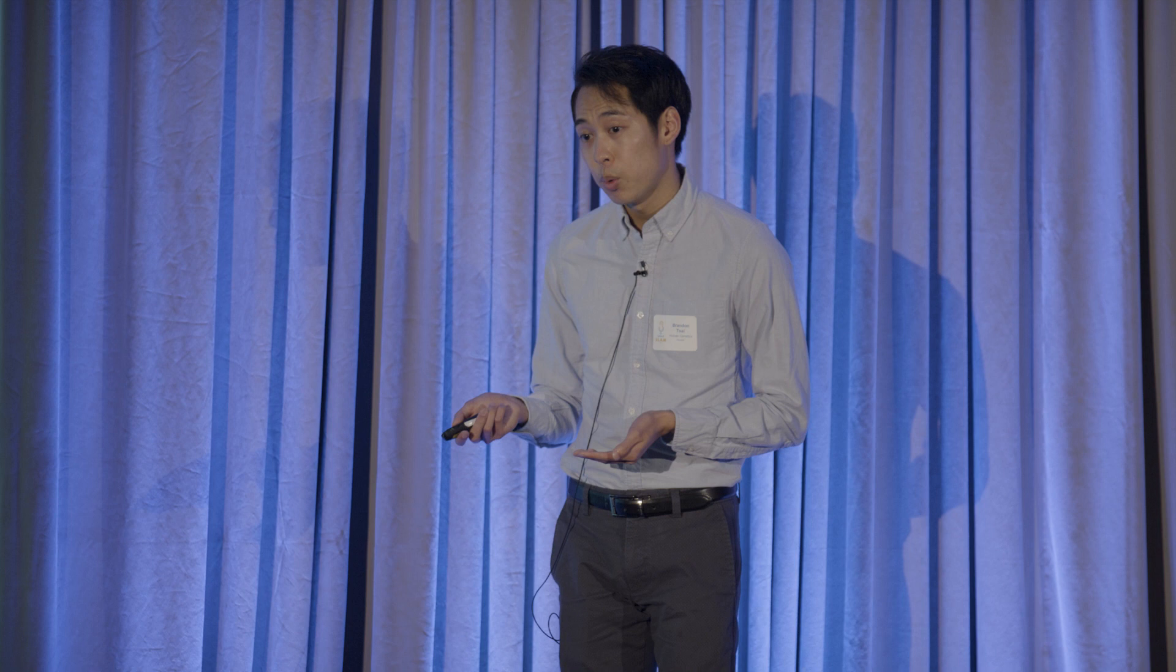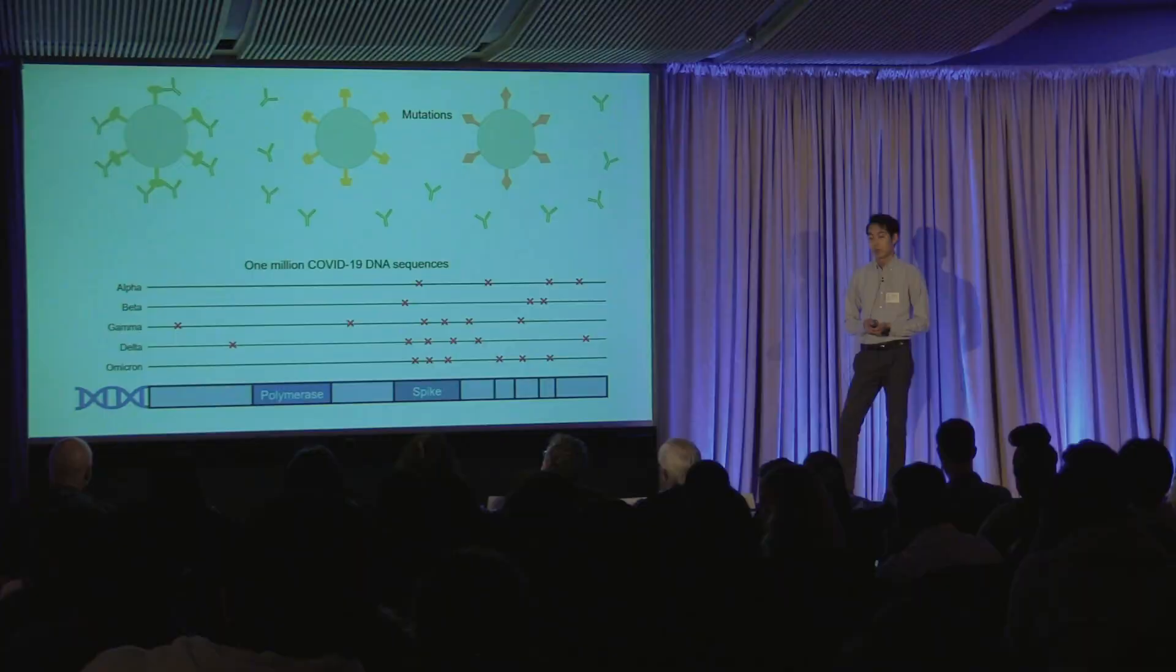So the virus can tolerate many more mutations in the spike protein, whereas the polymerase is very important, and therefore any mutations to the polymerase will likely cause the virus to die. To further support this discovery,